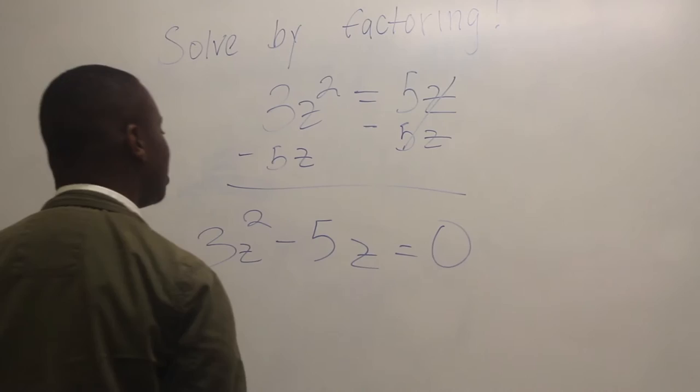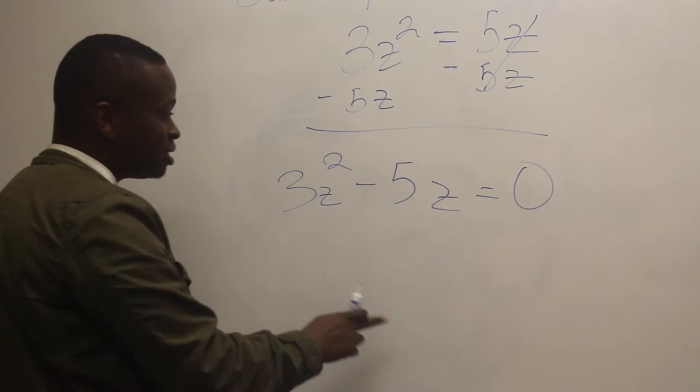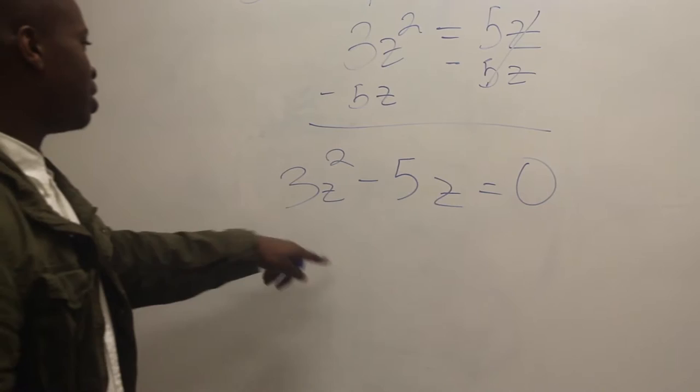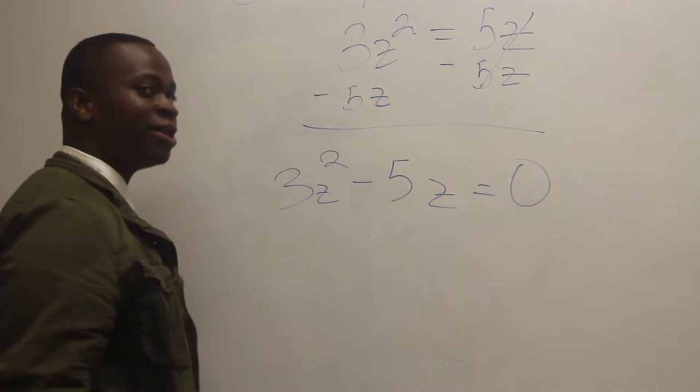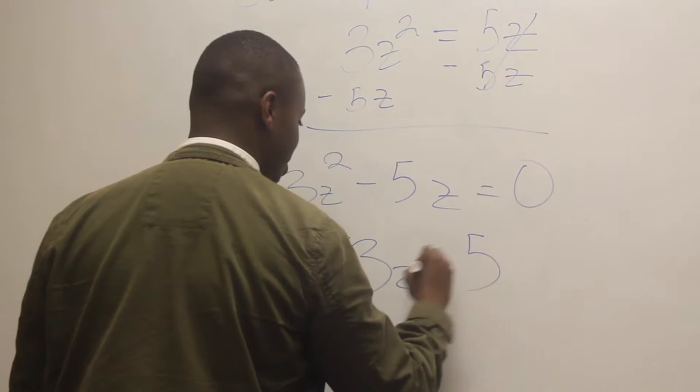So you're looking at your problem and asking what's the next step. The next step is simplifying further by factoring out the greatest common factor of three Z squared minus five Z. You look at the numbers and see there's nothing in common, so you move to the variables. They both have Z in common, so you factor out Z. You'll have Z on the outside of the parentheses and three Z minus five on the inside, equals zero.